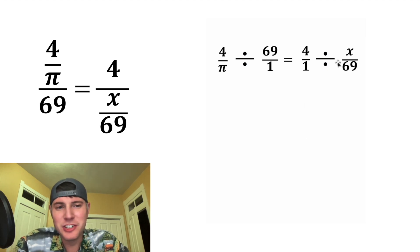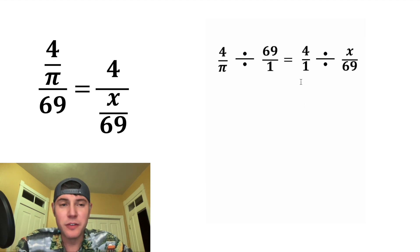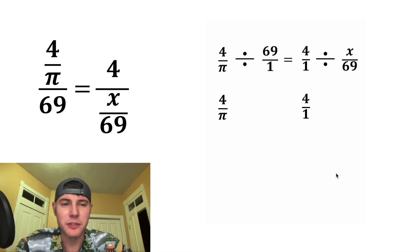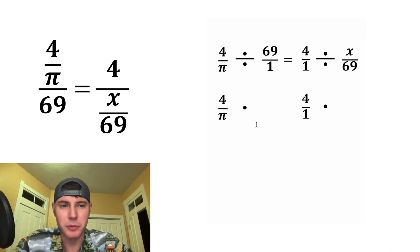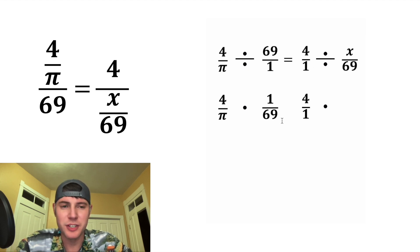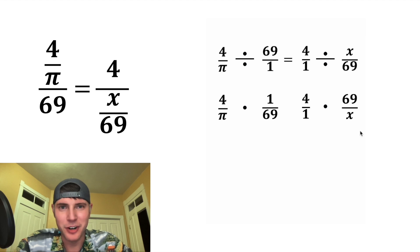Dividing fractions can be a little bit tricky, but there's a cool shortcut. You can leave the first fraction alone — copy down four over pi and four over one — and you change the divide into a multiply, and then you flip the second fraction. So 69 over one becomes one over 69, and x over 69 becomes 69 over x.